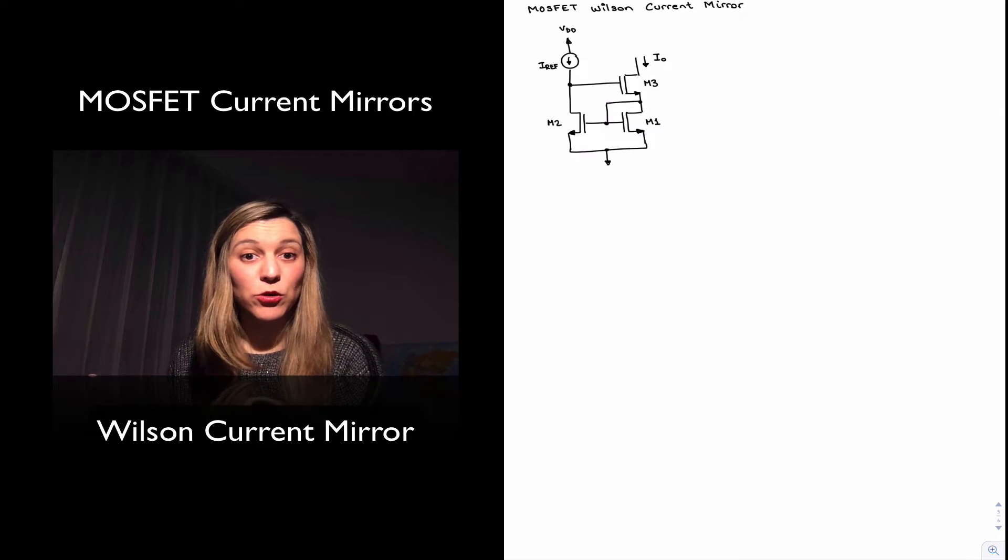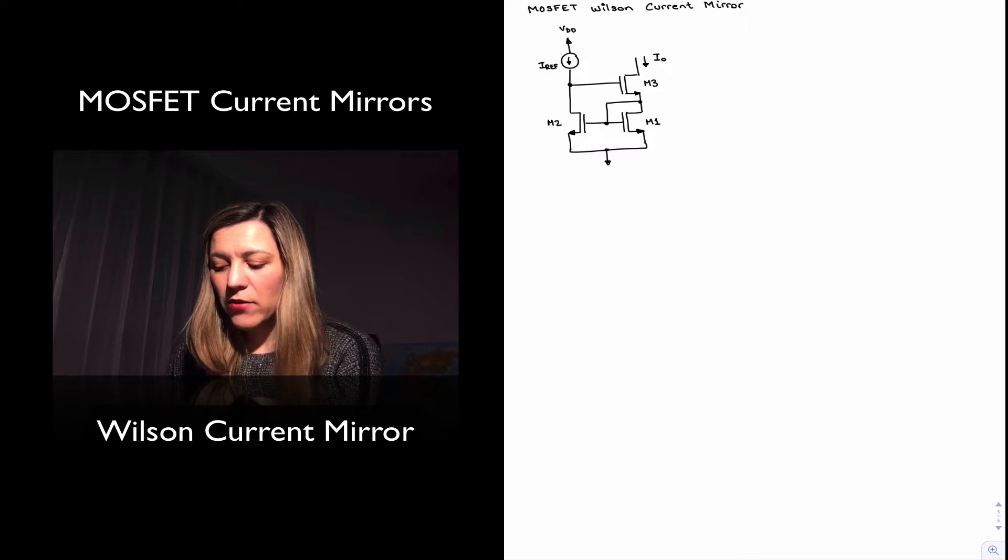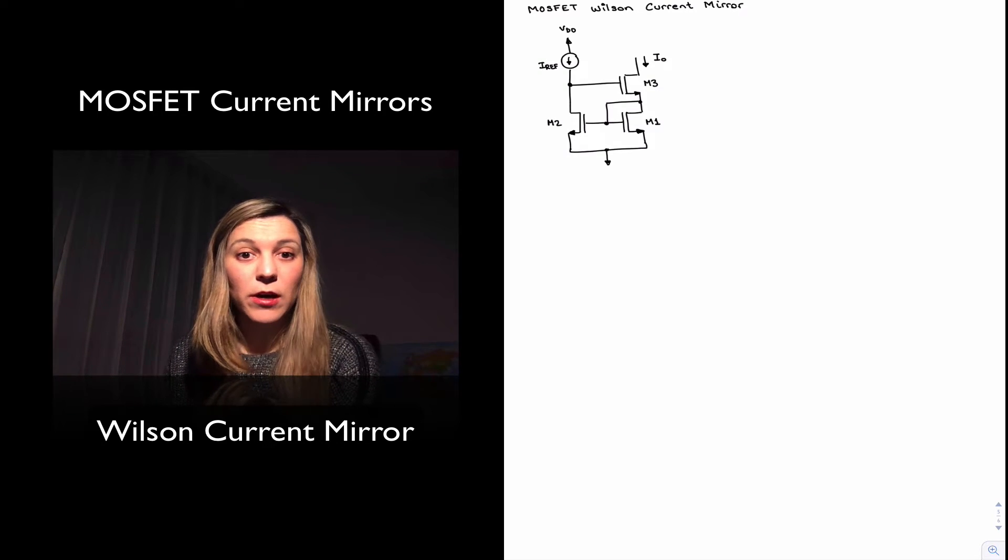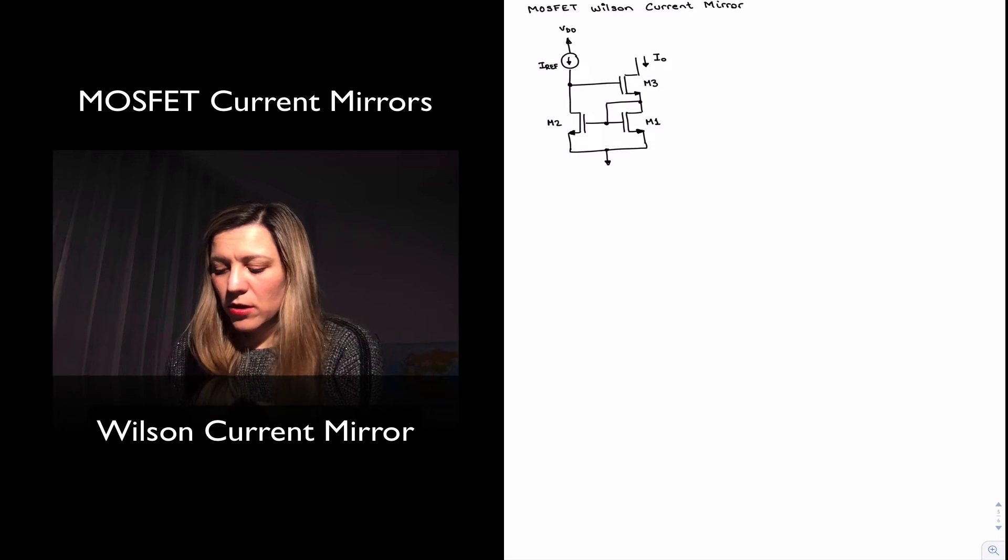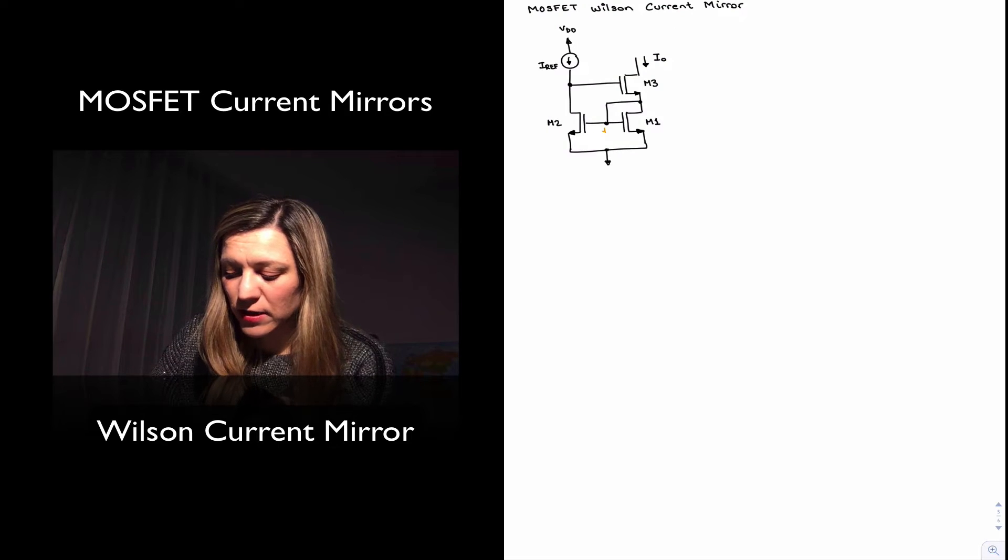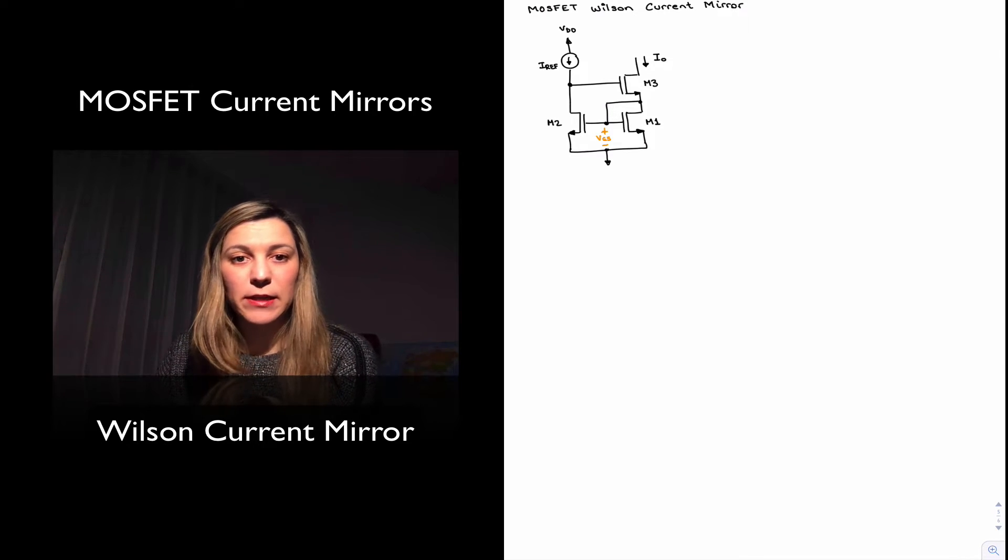Basically M1 and M2 are going to have mirroring currents because they share the same VGS voltage. And then we have an M3 transistor, and the output current is the current flowing through M3. Several things to notice: M1 and M2 are sharing the VGS voltage. And so if they both have the same VGS voltage, they're both going to have the same current, same IDS current.